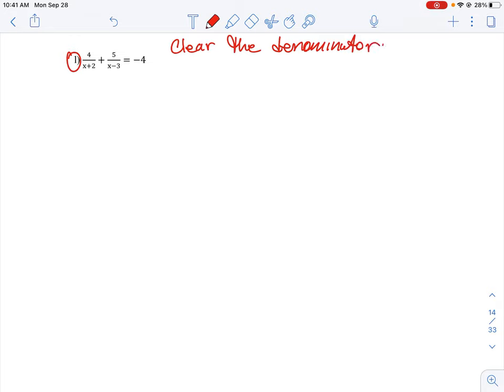Okay, so we need to find essentially the lowest common multiple that will allow us to multiply and clear this fraction. So let me just rewrite this out here. So we have x plus 2 on the bottom, x minus 3 on the bottom, and equal to negative 4.